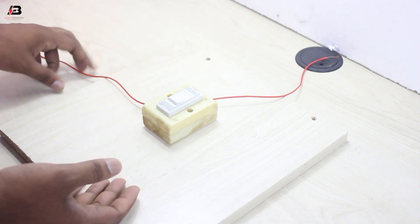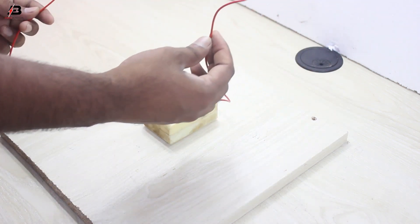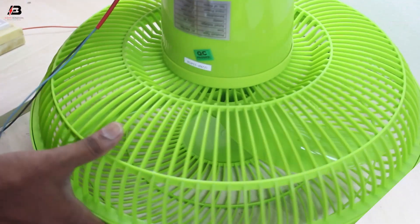Now our switch connection is okay. That's for source and that's the wire for load. We'll use this fan for connection and check it.